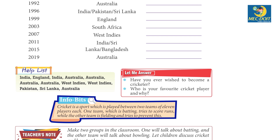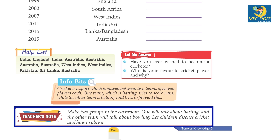Cricket is a sport which is played between two teams of 11 players each. One team which is batting tries to score runs, while the other team is fielding and tries to prevent this. Teacher's note: make two groups in the classroom — one will talk about batting and the other will talk about bowling. Let children discuss cricket and how to play it.